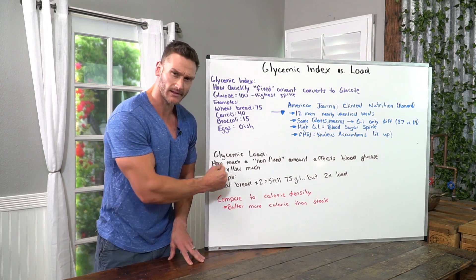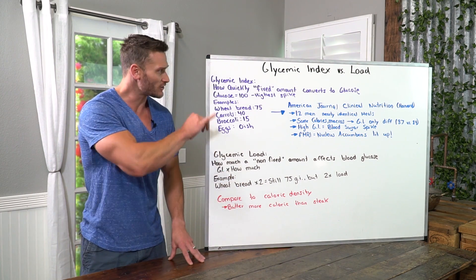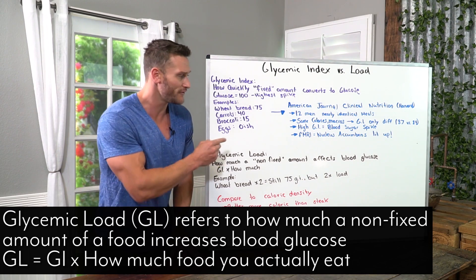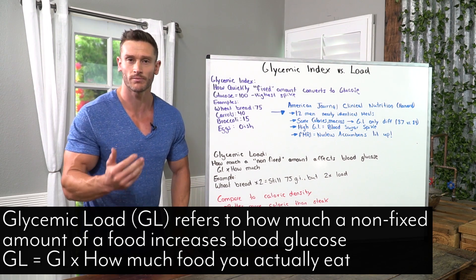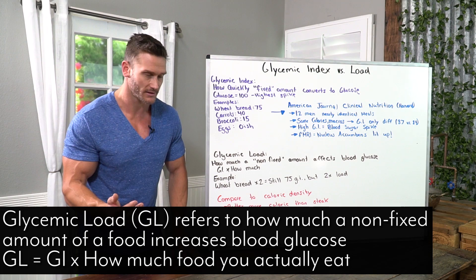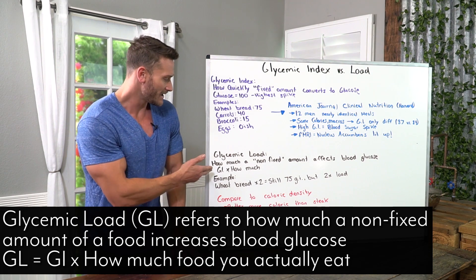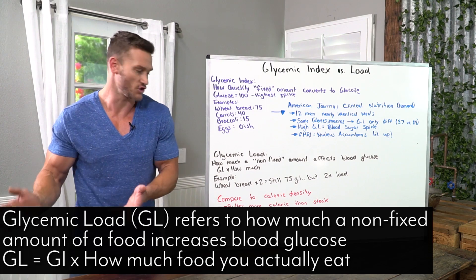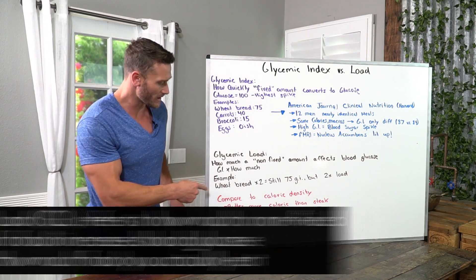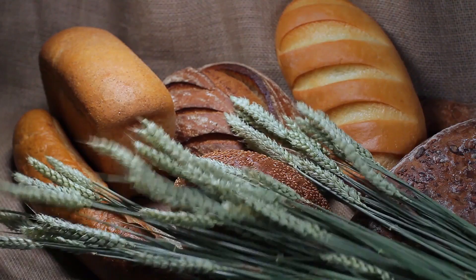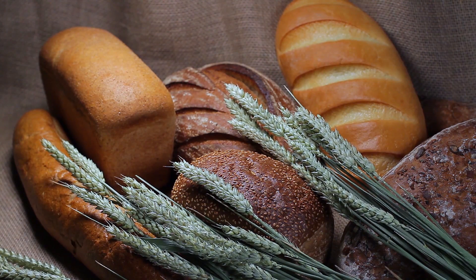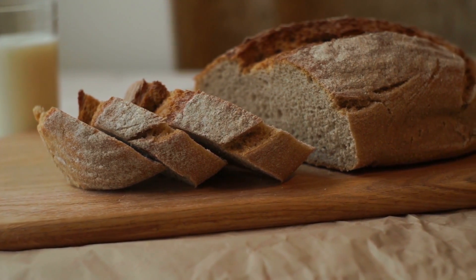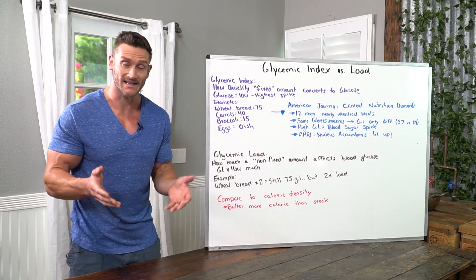Now what's glycemic load? People interchange them and get them mixed up. Glycemic load is how much a non-fixed amount affects your blood glucose. It's basically glycemic index multiplied by how much you eat. Using that same example of wheat bread — wheat bread is always going to be a 75, whether you eat one piece or 100 pieces. It's still the same glycemic index.